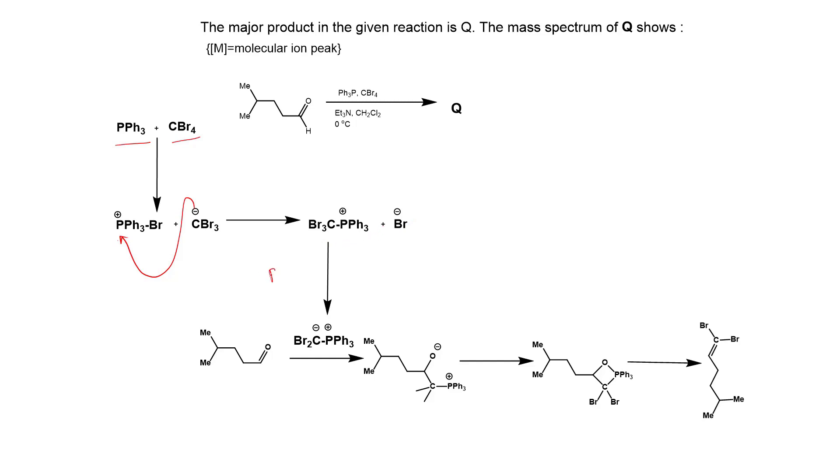Then another equivalent of PPh3 comes to form Br2C with a negative charge and PPh3+, and it goes in the form of Br2PPh3.